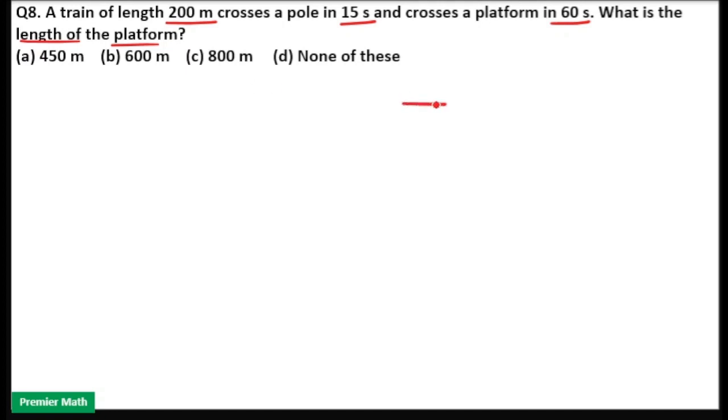Here train of length 200 meter is passing a pole in 15 seconds and it is passing a platform in 60 seconds. So we need to find out the length of this platform. Here you can see same train is passing pole and platform.